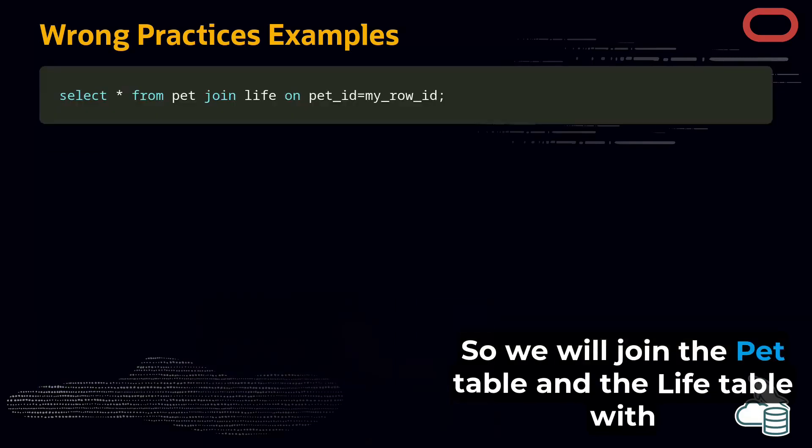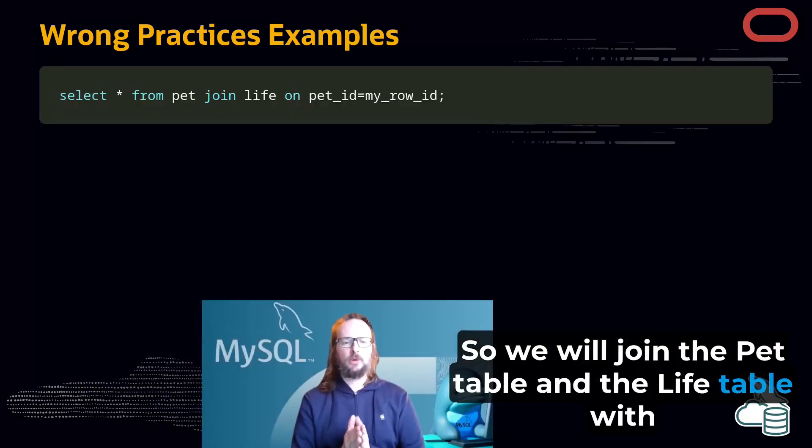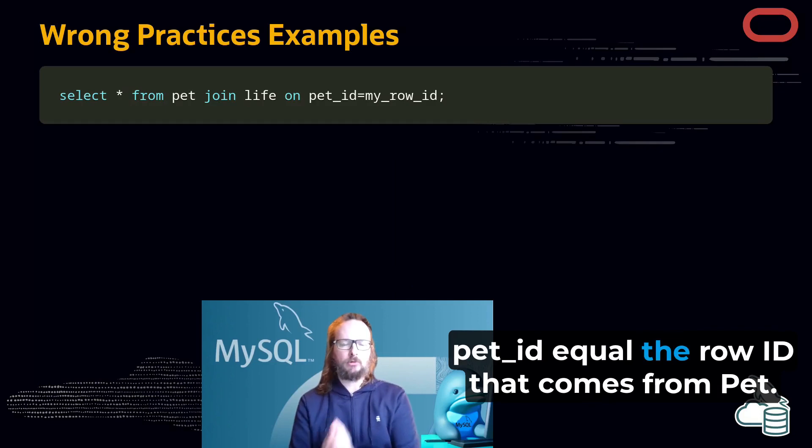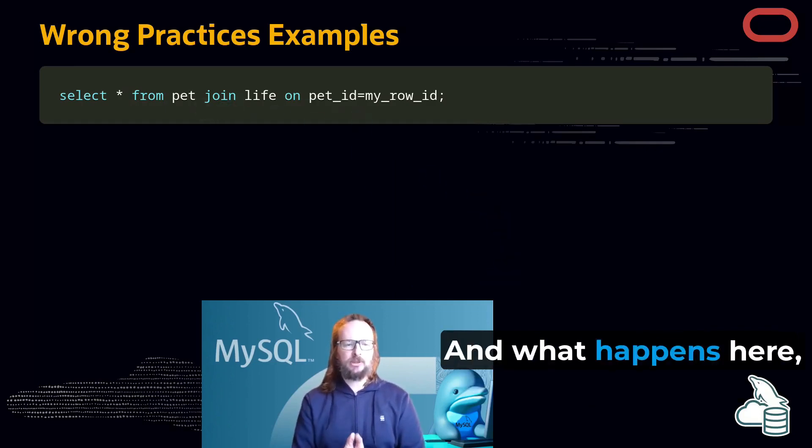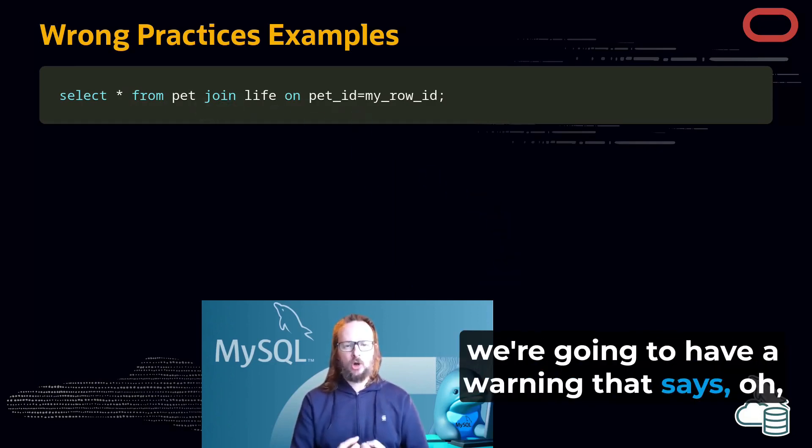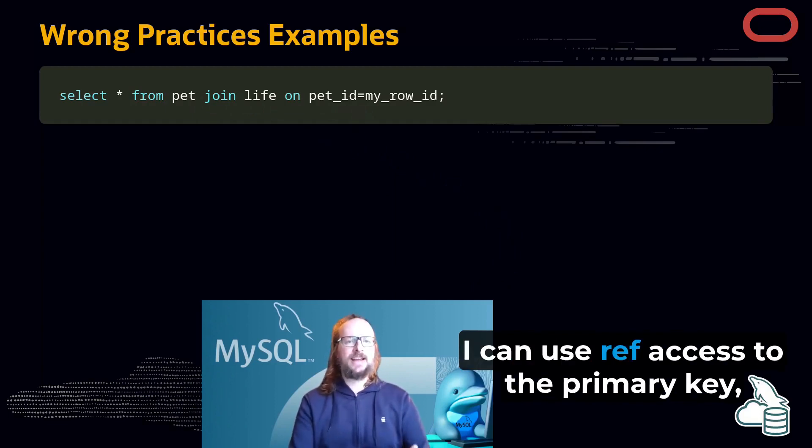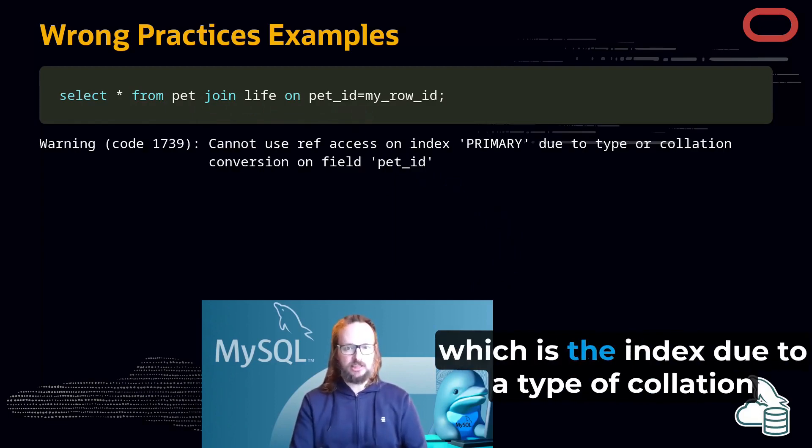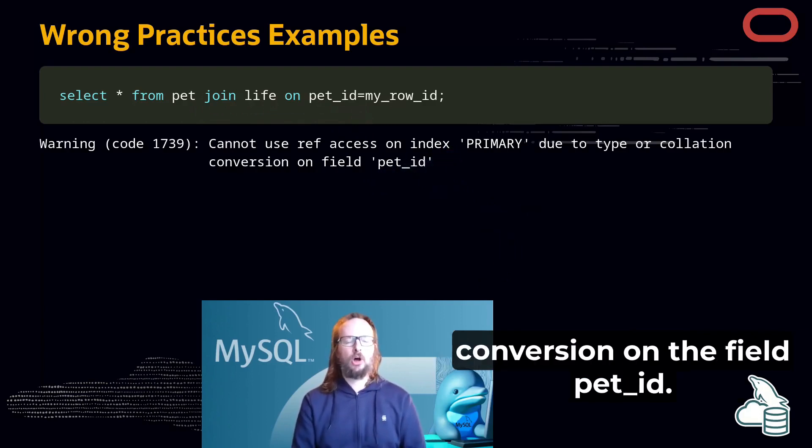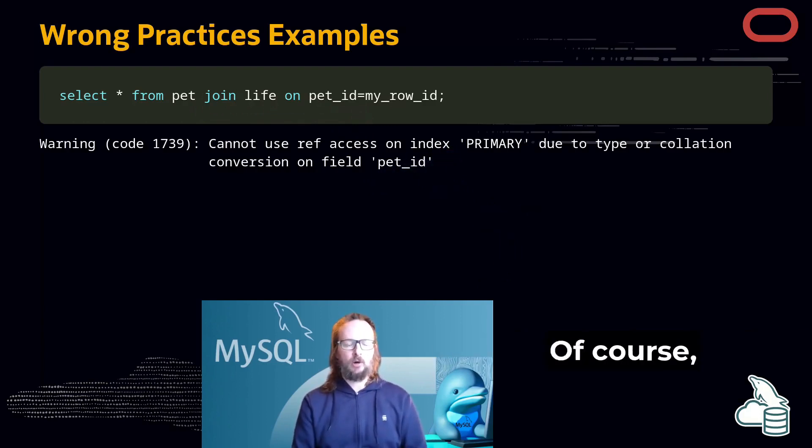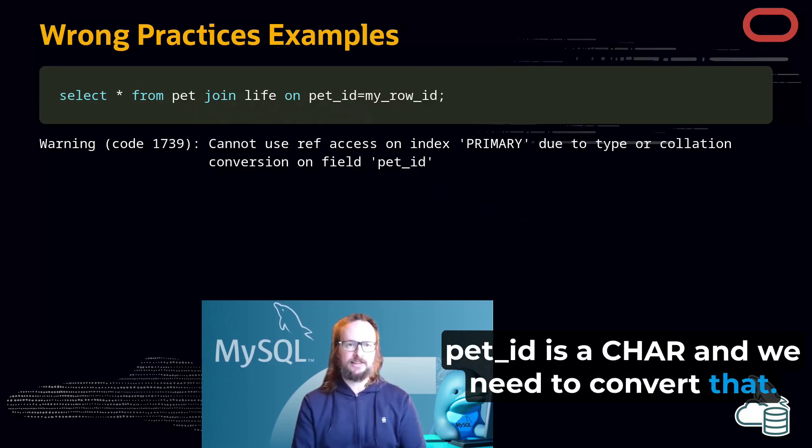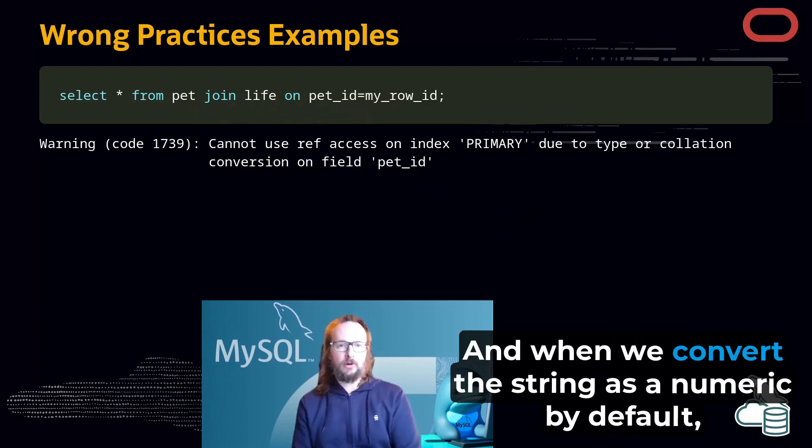We will join the pet table and the life table with pet ID equal to the row ID from pet. What happens here, we're going to have a warning that says I cannot use ref access to the primary key, which is the index, due to type or collation conversion on the field pet ID. Of course, pet ID is a char and we need to convert that.